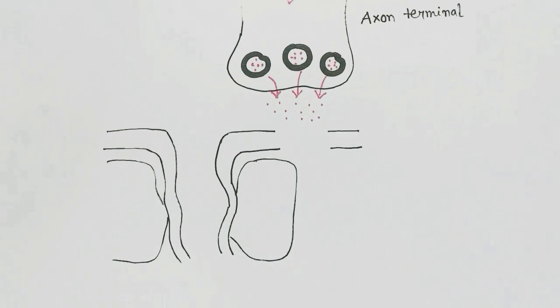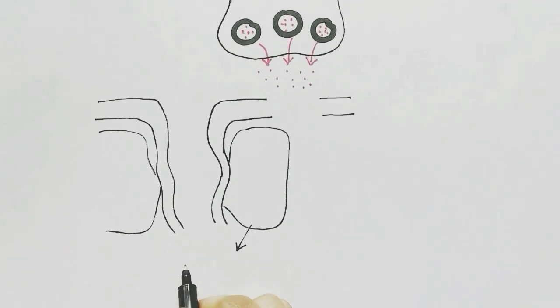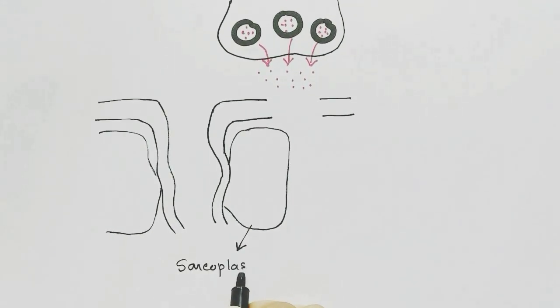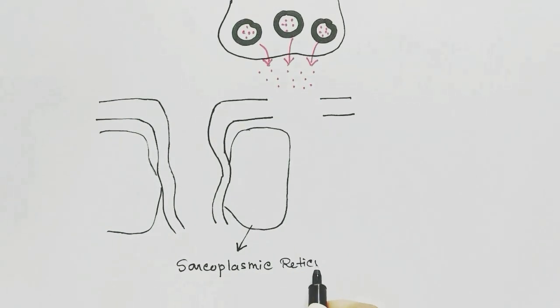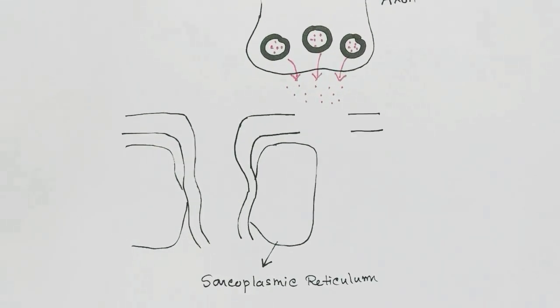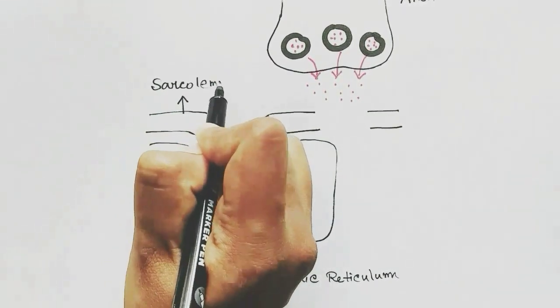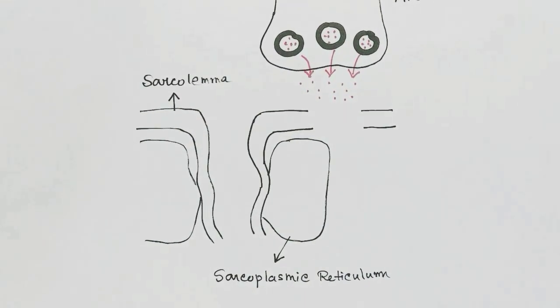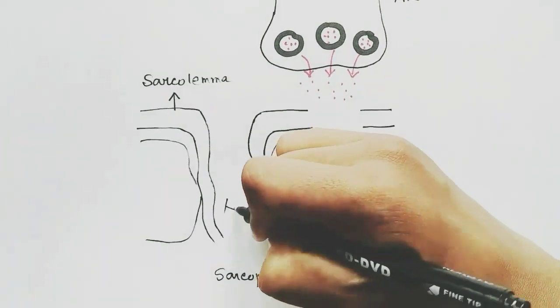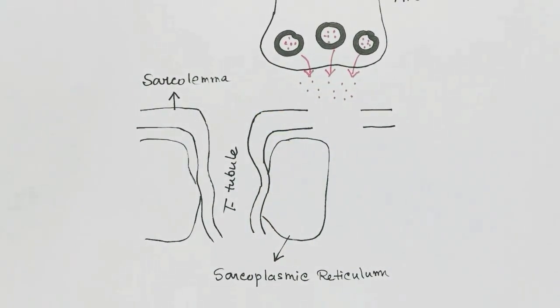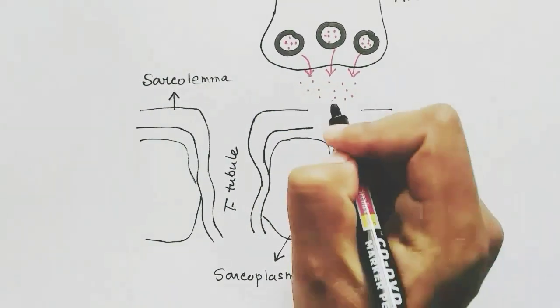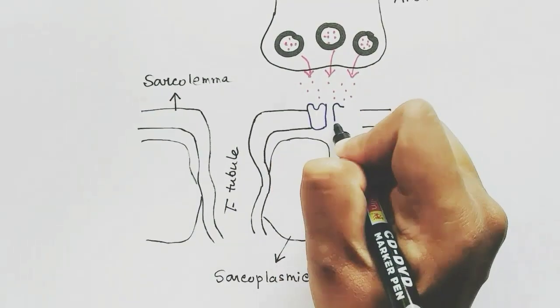This is the sarcoplasmic reticulum, which is in the muscle to store calcium ions. This is the sarcolemma, the layer of the muscle, and the passage between is the T-tubule.